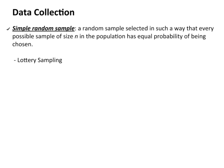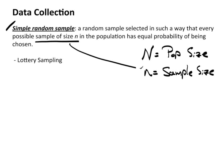The first one is commonly referred to as a simple random sample. It's a random sample selected in such a way that every possible sample size n in the population has equal probability of being chosen. Now some quick notation: we typically use capital N, this represents the population size. Little n represents our sample size. So when we say a sample of size n, we're talking about little n, that's the sample size.